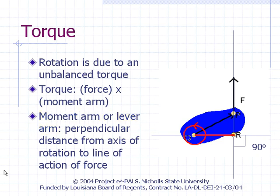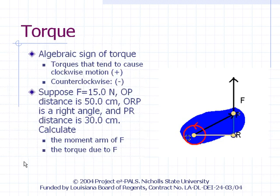In other words, in this example, the magnitude of the torque due to force F is equal to the magnitude of force F times the distance from point O to point R. Algebraic signs are assigned to torques depending on whether they tend to cause clockwise or counterclockwise rotation of an object. For our purposes, we will take a positive torque as the one that tends to cause clockwise rotation and a negative torque as the one that tends to cause counterclockwise rotation.